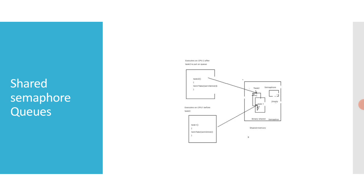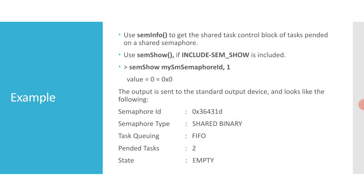Use sem_info to get the shared task control block of tasks pended on a shared semaphore. Use sem_show — if INCLUDE_SEM_SHOW is included in the project — to display the status of the shared semaphore and a list of pended tasks. The following example displays detailed information on the shared semaphore 'my_sm_semaphore_id', as indicated by the second argument: zero equals summary, one equals detail.